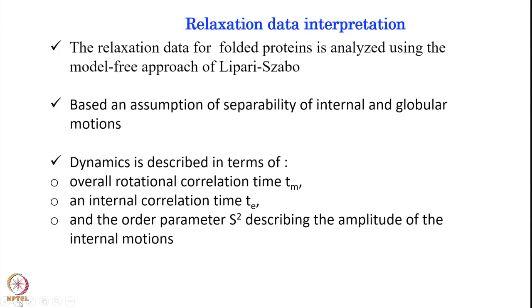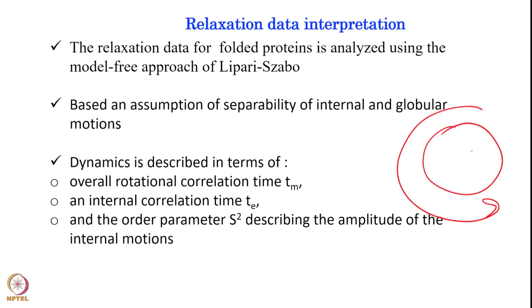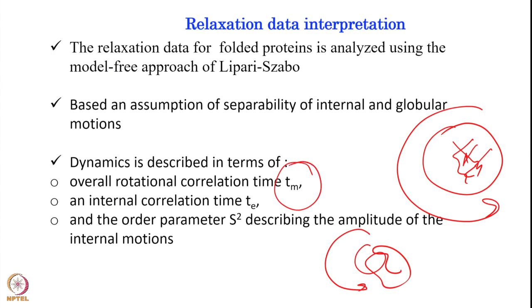Relaxation data for a folded protein can be analyzed using the model-free approach of Lipari-Szabo. This approach does not assume a specific model. It is based on the assumption that internal globular motion and overall tumbling can be separated: the protein's overall tumbling (τ_m) and the internal motion of loops and residues (τ_e) are described separately, along with the generalized order parameter S² that describes the amplitude of internal motion.